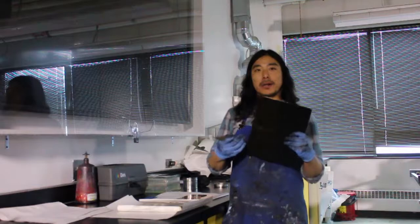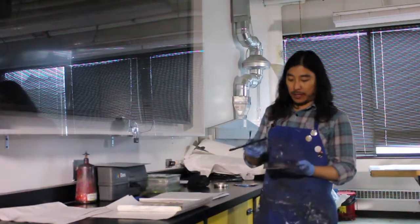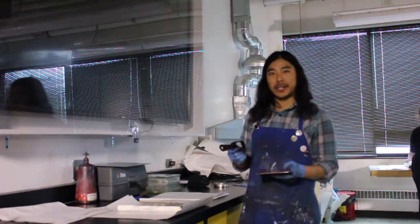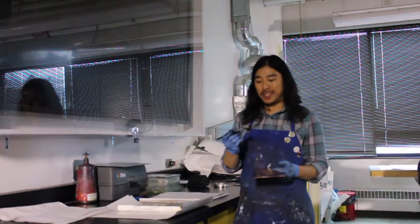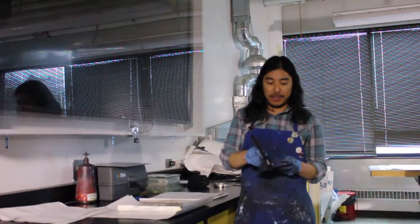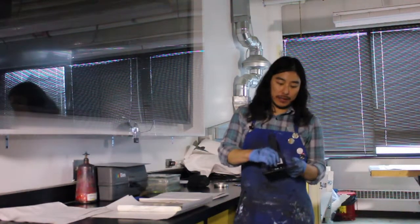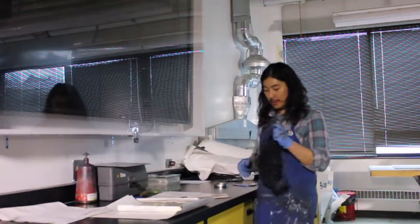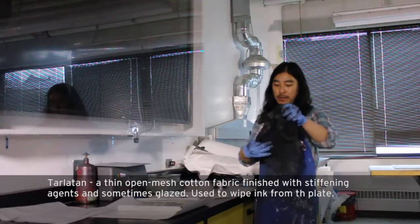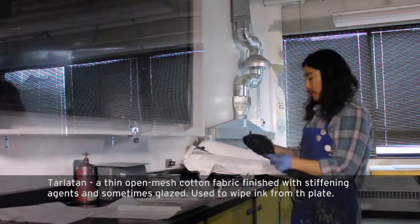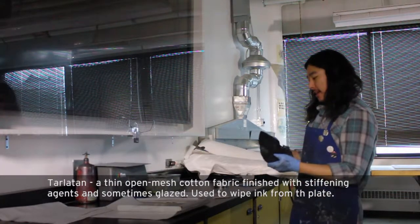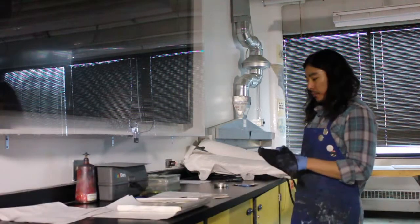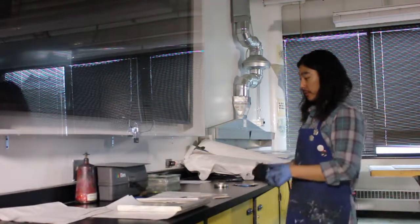You take a utensil like a bondo scraper - I have these ink knives, they're plastic so they won't scrape the copper. This is going to clean as well as push the ink into the grooves that you created.